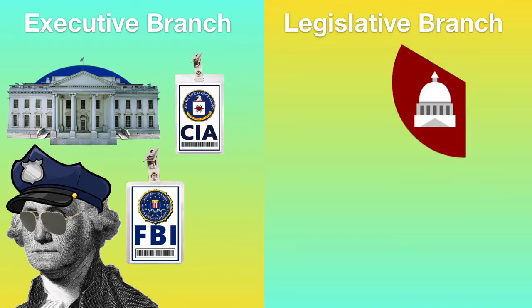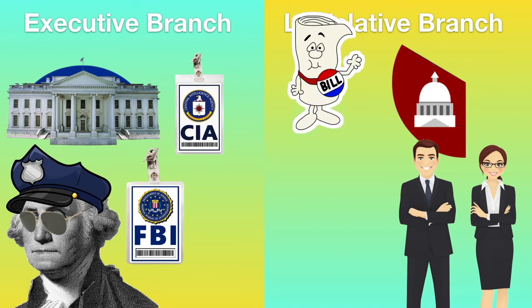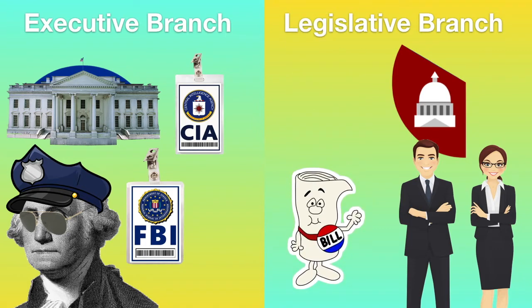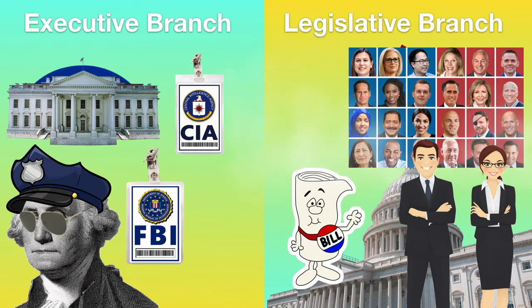On the other hand, we have the legislative branch. This branch is made up of lawmakers and they discuss bills or new ideas that are proposed to be laws. There are a whole lot of lawmakers working in Congress and each lawmaker represents the people from their state.